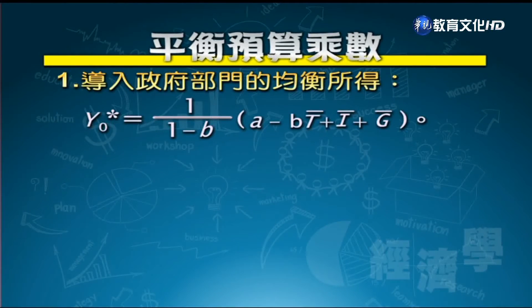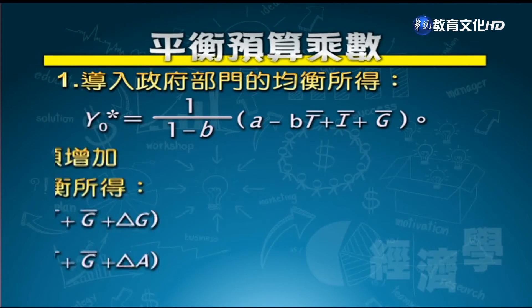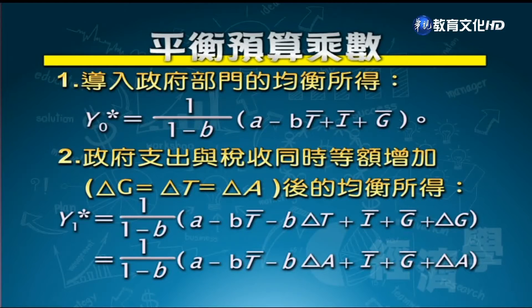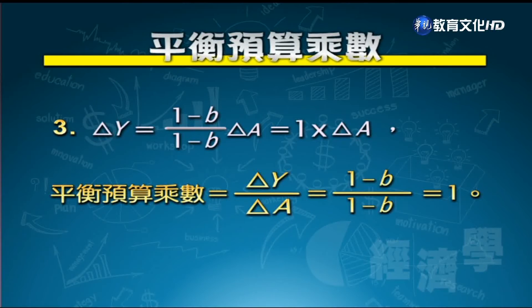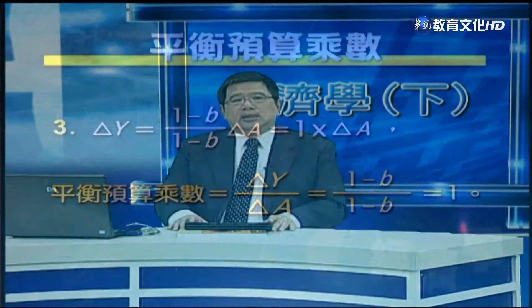今天討論了第25、26講，從只包含家計單位與廠商的簡單凱因斯模型，延伸至納入政府部門與國外部門的四大部門模型，討論了均衡所得決定、乘數與自發性支出的影響。重要結論：在簡單凱因斯延伸模型下，平衡預算乘數等於1；今天討論至此，再見。